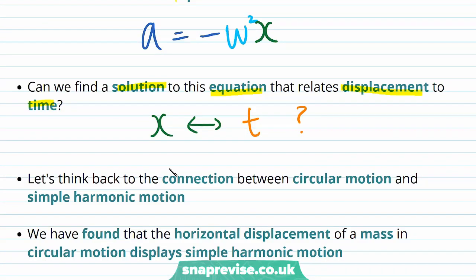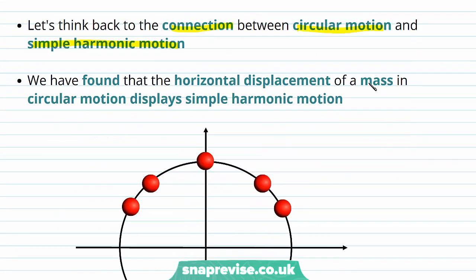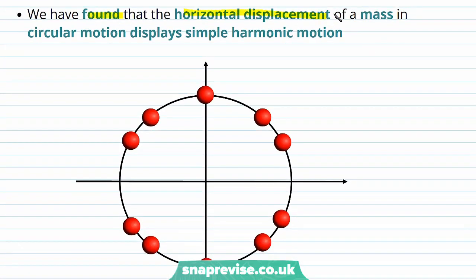To do so we need to think back to the connection between circular motion and simple harmonic motion. We've found that the horizontal displacement of a mass in circular motion displays simple harmonic motion, so let's consider uniform circular motion superimposed on a set of axes. The ball moves around the circle with an angular frequency of omega. As it moves along the circle, its displacement along the x-axis is going to change.